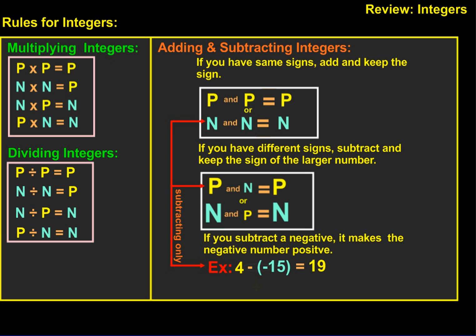As for adding and subtracting integers, if you have the same signs, you're going to add and keep the sign. So a positive plus a positive equals a positive, and a negative plus a negative equals a negative. If you have different signs, you're going to subtract and keep the sign of the larger number. So if you have a large positive and a small negative, your answer will stay positive. If you have a large negative and a small positive, your answer will stay negative.